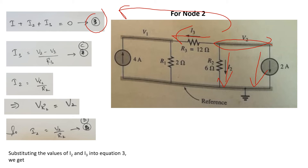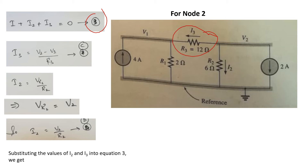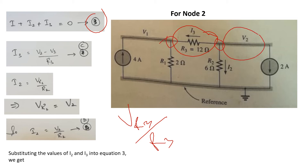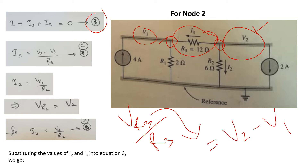So we can write the KCL equation as I plus I2 plus I3 is equal to 0, which is equation number 3. Now we have to find the values of I3 and I2. From the figure, you will see that the value of I3 is basically equal to Vr3 divided by R3. Vr3 has two potentials, V2 and V1. When we are taking V2 as a reference, V2 is at higher potential and V1 is at lower potential, so we can write Vr3 is equal to V2 minus V1. So I3 is equal to V2 minus V1 divided by R3. Name this equation C.